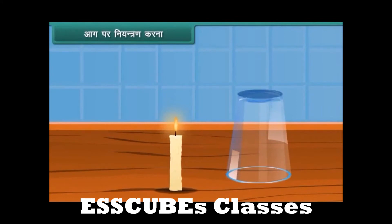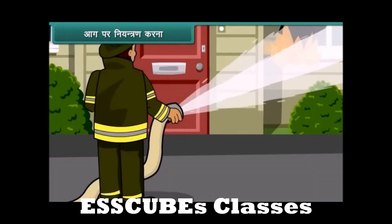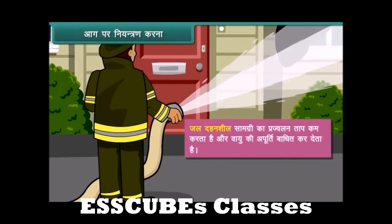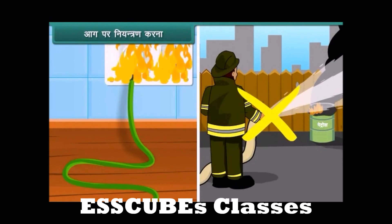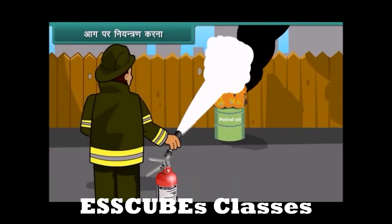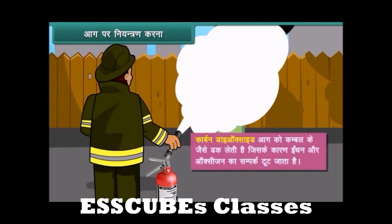आग बुझाने के बारे में: आग के लिए ऑक्सीजन, उष्मा और इंधन जरूरी हैं — इनमें से किसी की भी आपूर्ति बाधित करके आग बुझाई जा सकती है। फायरमैन आग बुझाने के लिए पानी डालता है — जल दहनशील सामग्री का प्रज्वलन ताप कम करता है और वायु की आपूर्ति बाधित कर देता है। लेकिन बिजली के उपकरणों और तेल में लगी आग के लिए कार्बन डाइऑक्साइड सबसे अच्छा अग्निशामक है, क्योंकि CO₂ ऑक्सीजन की तुलना में भारी होने के कारण आग को कंबल की तरह ढक लेती है।